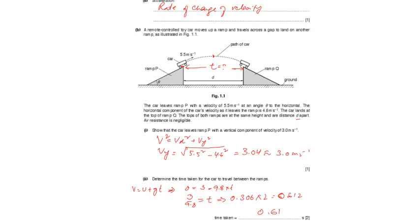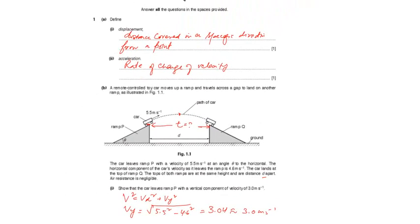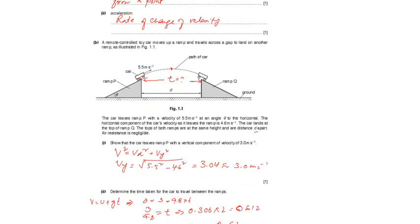The question says, define the limit. Distance curved in a specific direction from a point is called distance. Acceleration is rate of change of field of distance. And the next part is, a remote control car moves around and travels across the gap to land on another ramp, right?